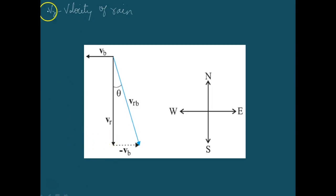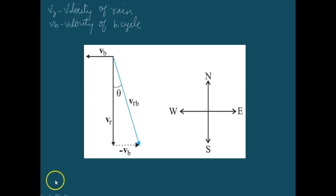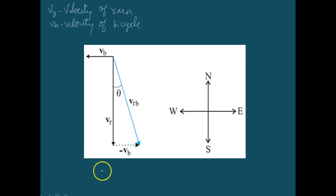VB represents the velocity of the bicycle, which is in the east to west direction. Both these velocities are with respect to the ground.